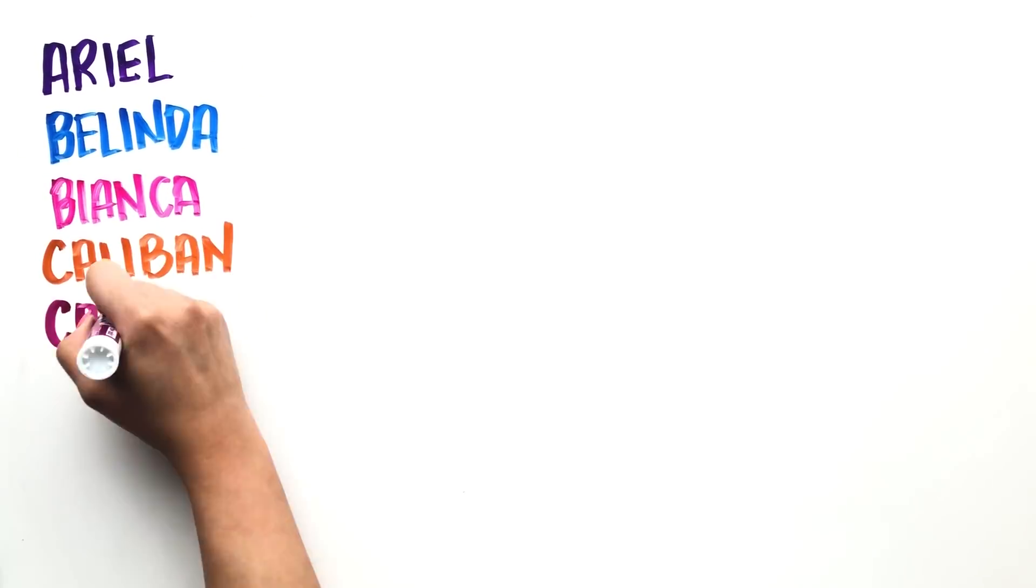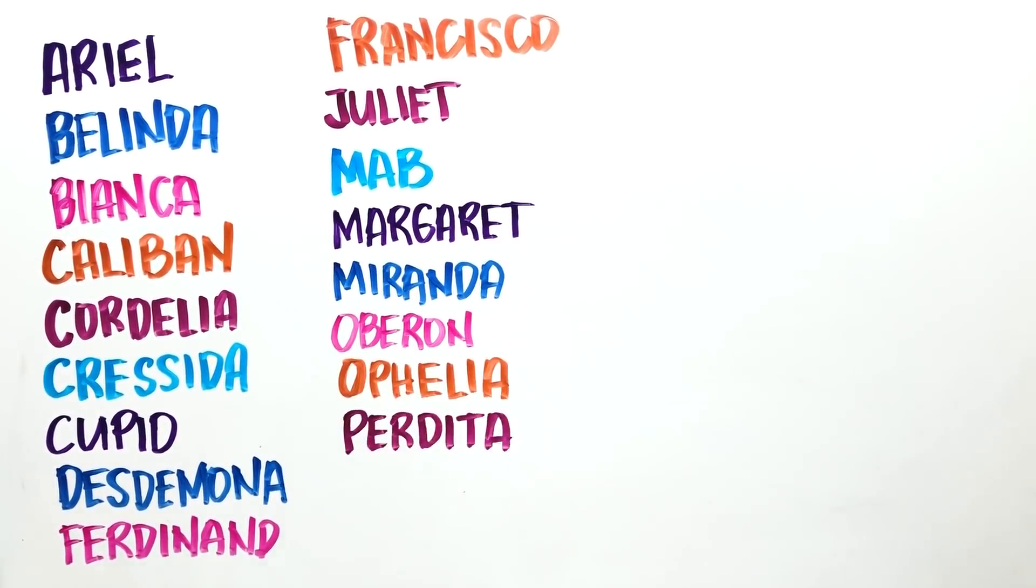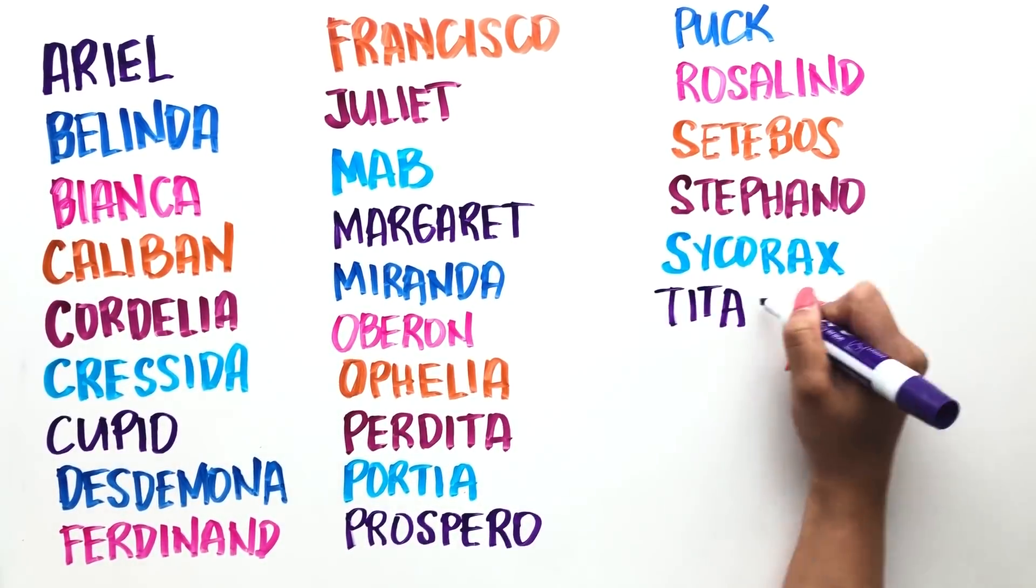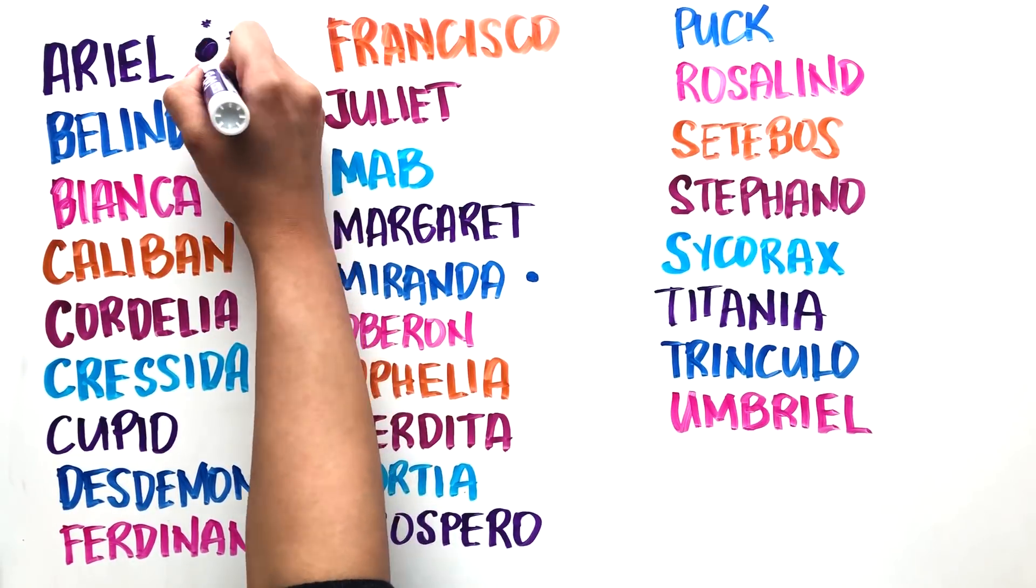It has 27 known moons and many of them are named after Shakespearean characters. The five major moons are Miranda, which is the smallest, and Ariel, which is the brightest.